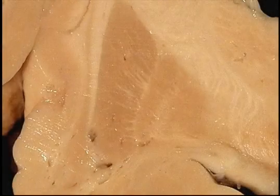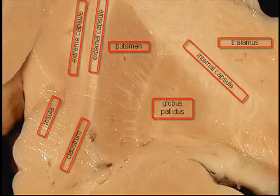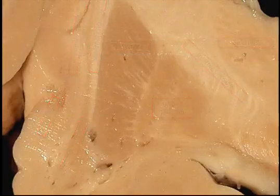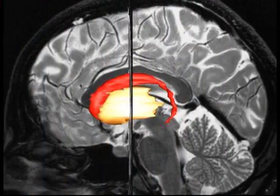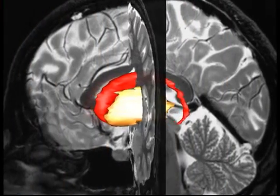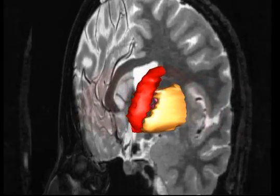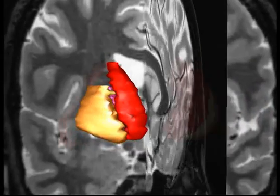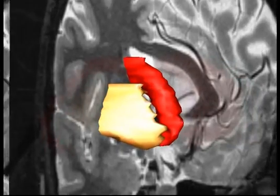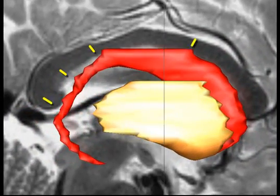Here is the frontal section of the lentiform nucleus of real human material. Note that in the embryonic brain the caudate nucleus and the lentiform nucleus are one big cell mass, which is split in two by internal capsule fibers growing from the cortex down into the brain stem.